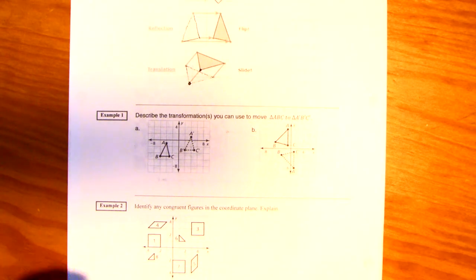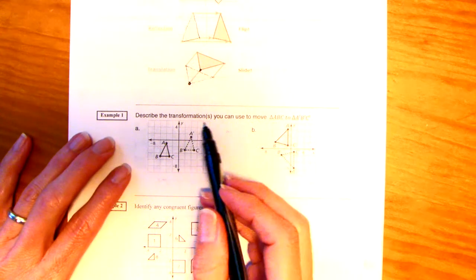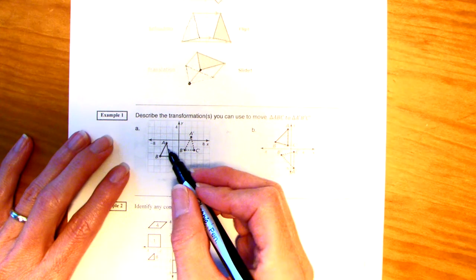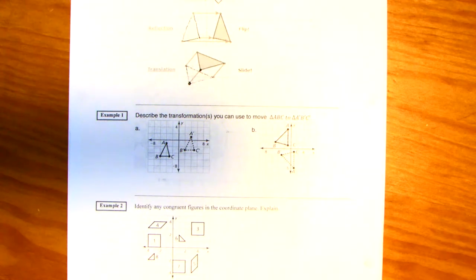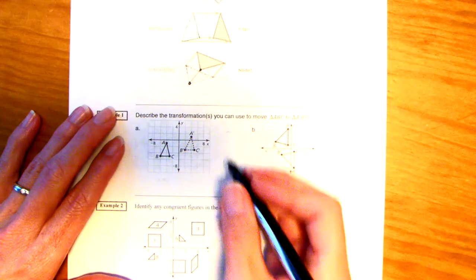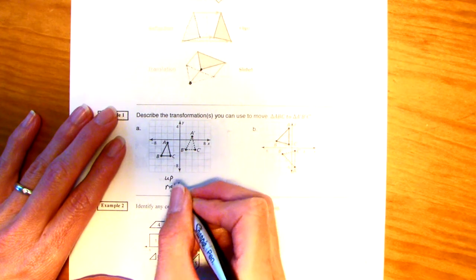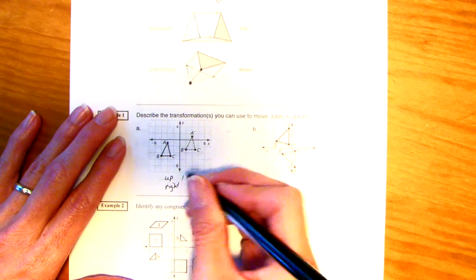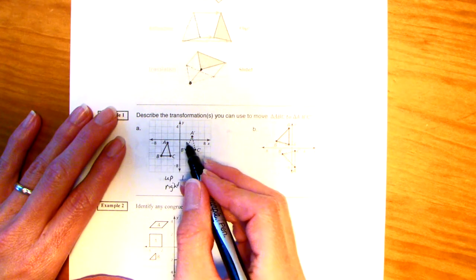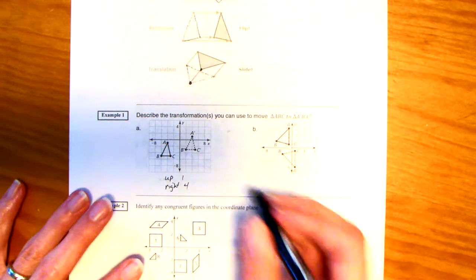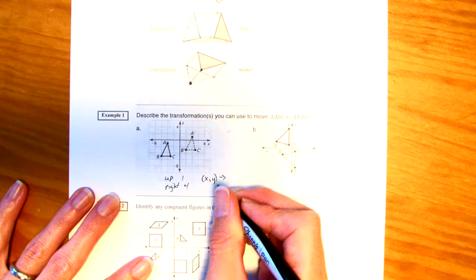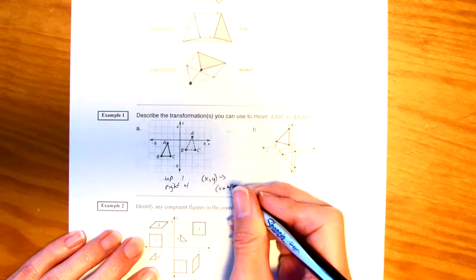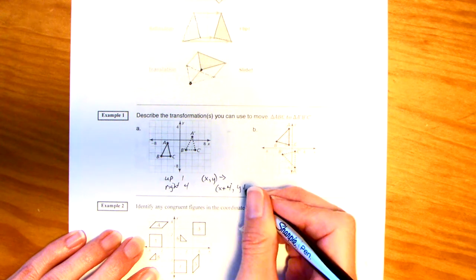Let's look at example one. Describe the transformations that you can use to go from A, B, C, to A prime, B prime, C prime. Look at point A. It looks like it's translating up, then to the right. We're at negative a half. It's going to go up one whole, because it's at a positive half. So, up one, and then to the right, how many? One, two, three, four. So, up one, right four. What would that rule be? X, Y would go to, the right is going to the right four, so X plus four. And the Y is going up one, so Y plus one. That would be the rule for that.